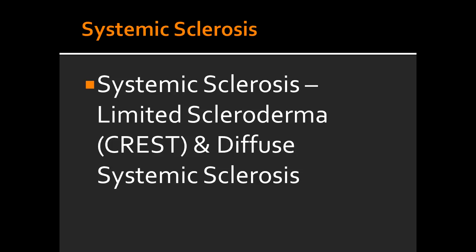Define Systemic Sclerosis. Systemic Sclerosis means excessive fibrosis throughout the body. Define Fibrosis. Fibrosis just means thickening and scarring of the connective tissue.